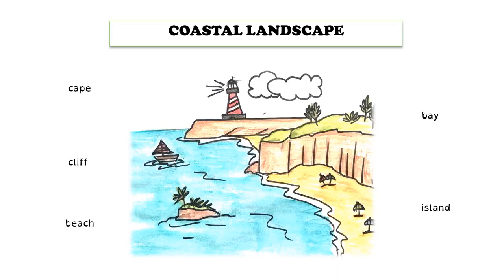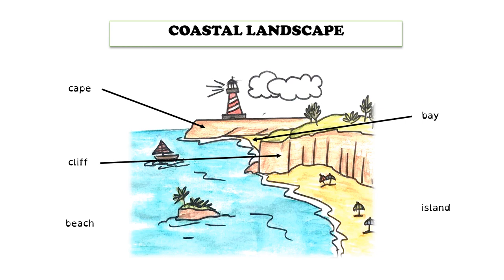Let's review the two types of landscapes. Let's start with the coastal landscape. We have different features like the Cape, the Bay, the Cliff, the Island, or the Beach.